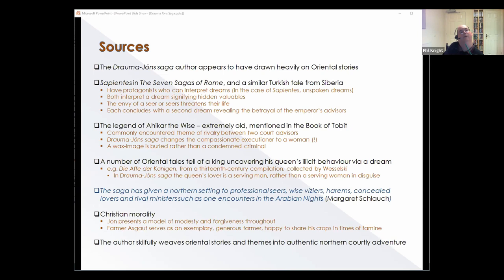An Aramaic fragment dates to the 5th century BC, and it's mentioned in the much earlier Book of Tobit. The number of ancient Indo-European versions of the story also suggests that it probably derived from a single ancient source. Draumr Jóns's most significant change is the introduction of a woman, Heinrich's wife, as the compassionate executioner. This is particularly noteworthy in alteration, given the improbability of Heinrich ordering a female to carry out the murder, let alone his own wife and the emperor's sister. A wax dummy is also buried rather than a condemned criminal. The final section of Draumr Jóns parallels a number of oriental tales whereby a king seeking explanation of a puzzling incident such as a dream uncovers the illicit behavior of his queen.